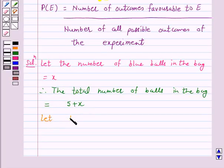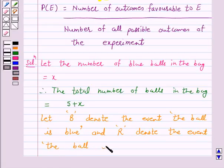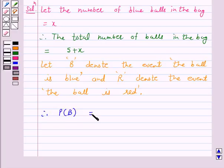Let B denote the event the ball is blue and R denote the event the ball is red. Therefore, the probability of event B is equal to X upon 5 plus X. And similarly, P(R) is equal to 5 upon 5 plus X.